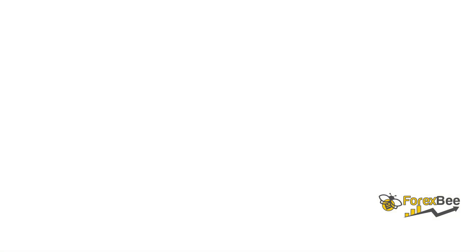The reason for that is that euro is the base currency in this pair and United States dollar is the quoted currency. So whenever you buy a pair, what happens is you buy the base currency and you spend your quote currency. That's why you have received 100,000 units of euros — one standard lot — and you have spent one hundred and eighteen thousand one hundred and seventy-two United States dollars.